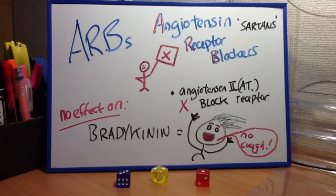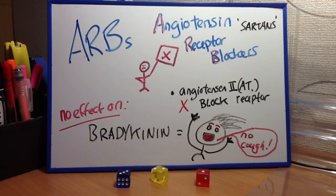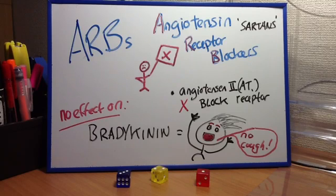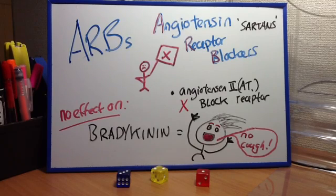For the mechanism of action, the ARBs act by blocking the angiotensin 2 receptor, thereby blocking the effects of angiotensin 2. Angiotensin 2 is a vasoconstrictor. It increases perfusion pressure in the glomeruli through vasoconstriction of the efferent arterioles of the kidney. It stimulates aldosterone production, which leads to increased salt and water retention by the kidney. By blocking the effects of angiotensin 2, the ARBs act to decrease peripheral vascular resistance and decrease the effective circulating volume of fluid in the body.